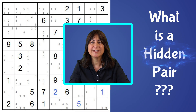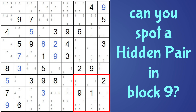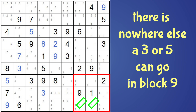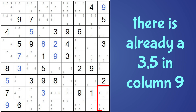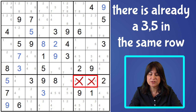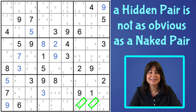So now that we know what a naked pair is, what is a hidden pair? Just like a hidden single, the hidden pair will be hidden amongst other candidates. In this next example, take a look at block nine. Can you spot a hidden pair in block nine? It's the three-five in block nine. These two cells are the only cells in block nine that can be a three or a five. There are other candidates in those cells, but there's nowhere else the three or five can go in the block. It can't go in either of these two cells because there's already a three and a five in the column, and it can't go into either of these two cells since there's already a three and a five in the same row. So the three and five must go into one of these two cells. This pair is called a hidden pair because it's not so obvious like a naked pair — it's hiding amongst the other possible candidates.